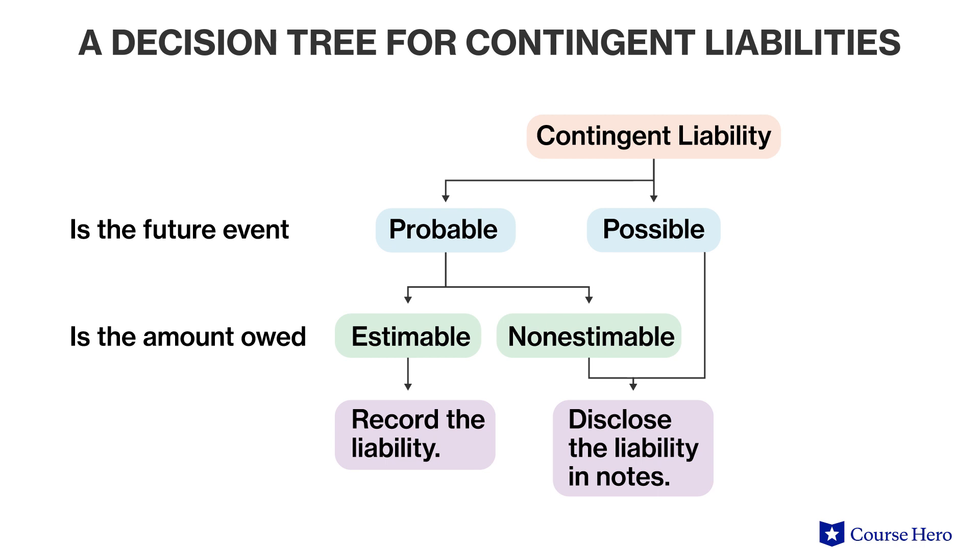Even assuming that the probability of this liability becoming actual is more likely than not, there is uncertainty about the amount of penalties and there is absolutely no basis to estimate the amount. Under these conditions, this contingent liability should not be recorded on the balance sheet but should only be disclosed in the notes to the financial statements as a possible liability.